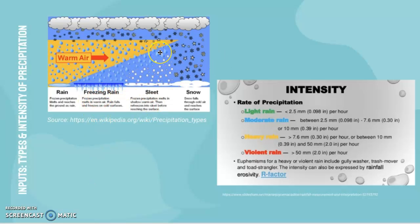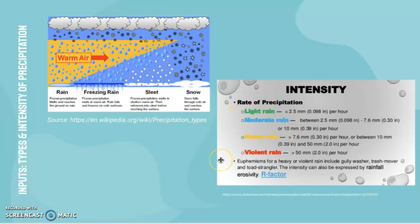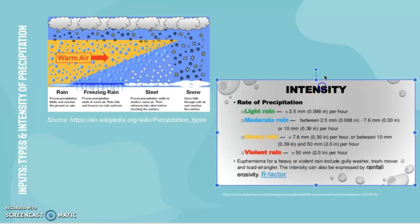If you have freezing rain, sleet, or snow landing on surfaces outside the river channel — on the banks, floodplain, or outside the drainage basin — it's less likely to directly flow as surface runoff into the river, because it is frozen and may melt over time depending on weather conditions. Regarding intensity, there is light rain, moderate rain, heavy rain, and violent rain. With more violent rain, larger volumes per hour mean a larger input.